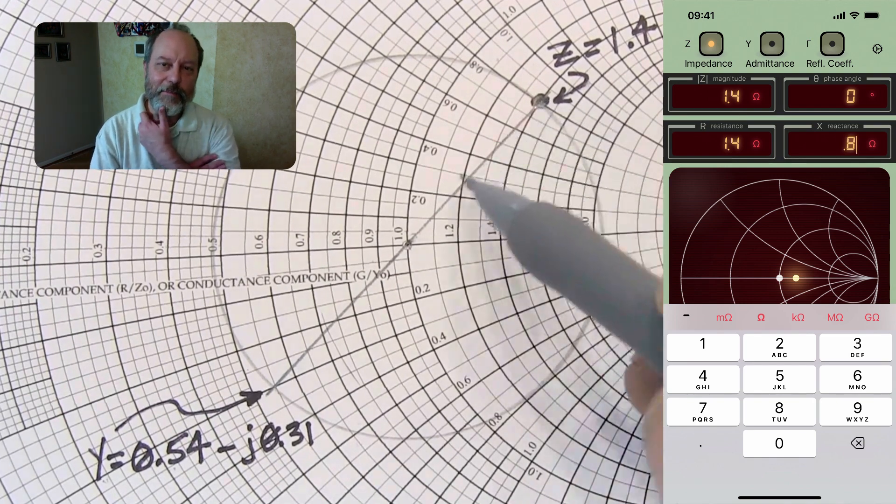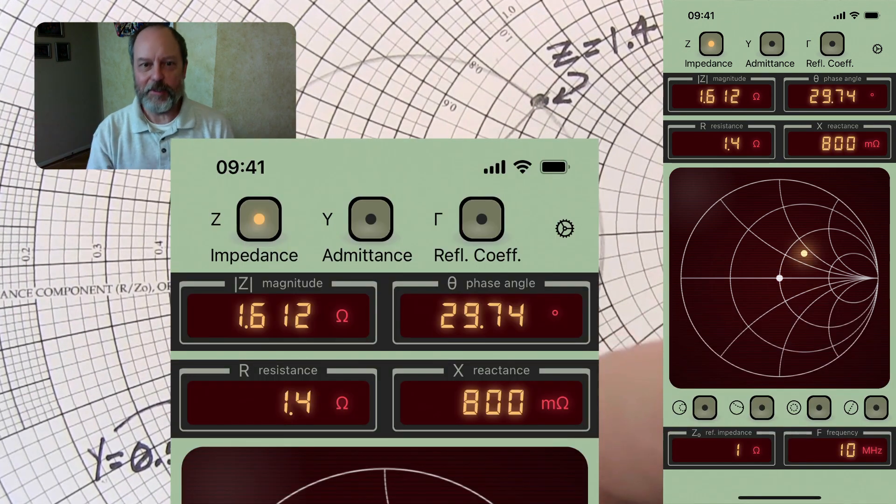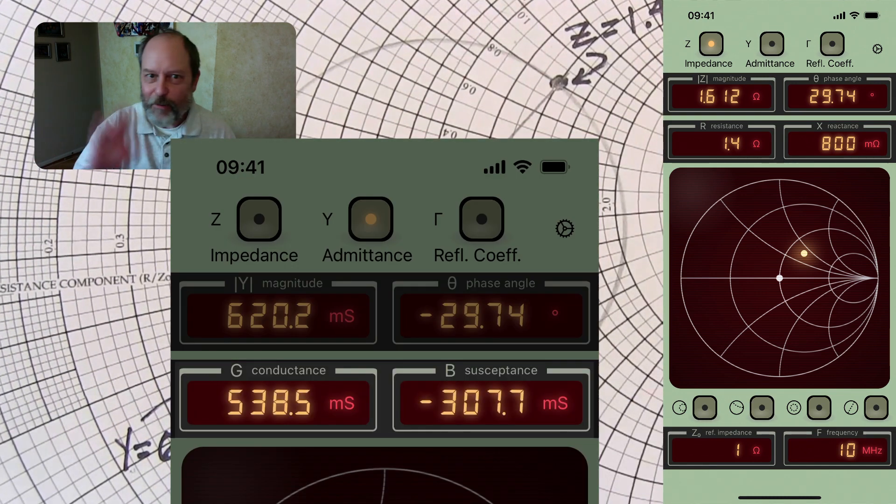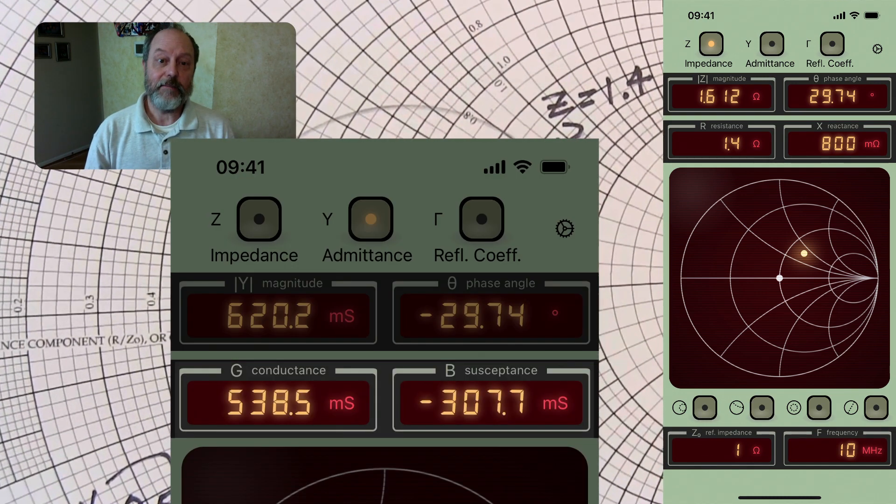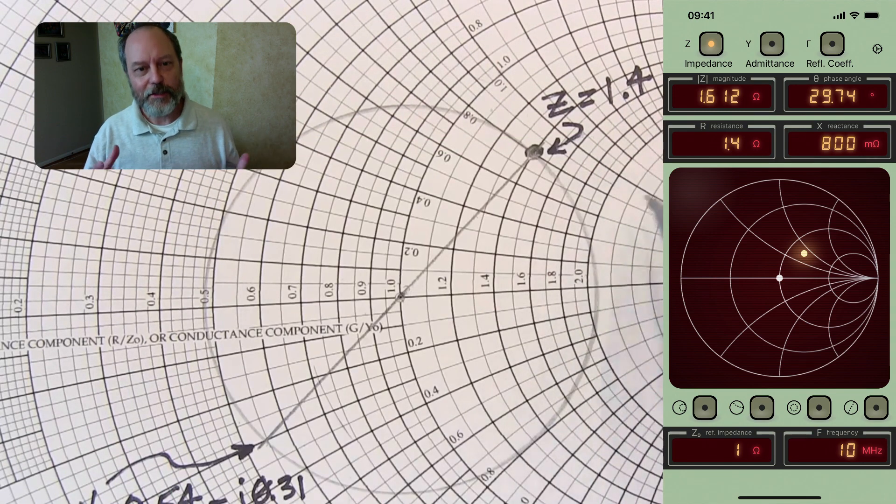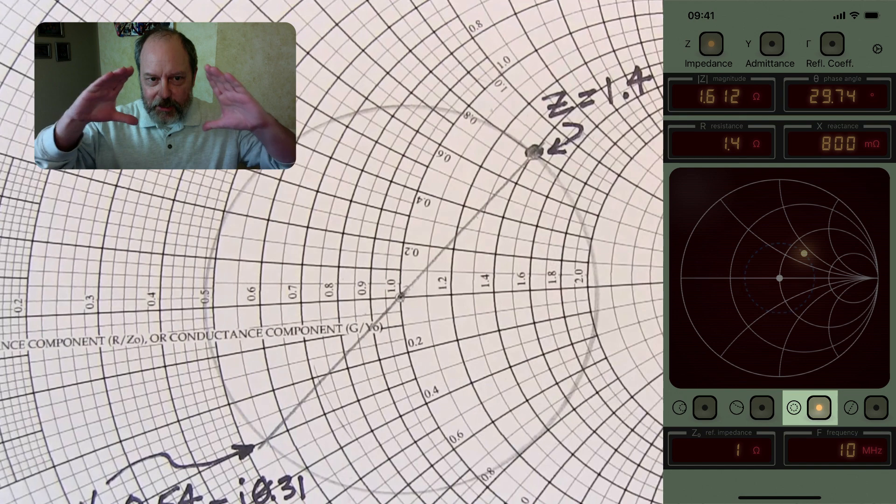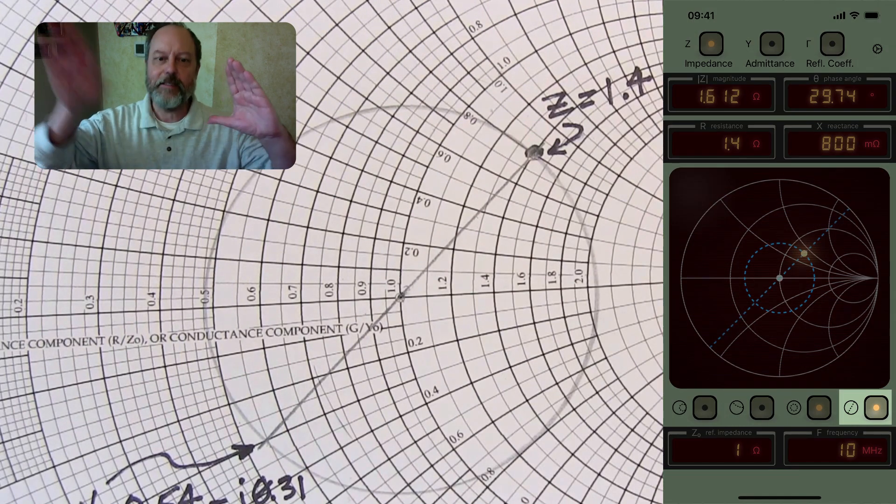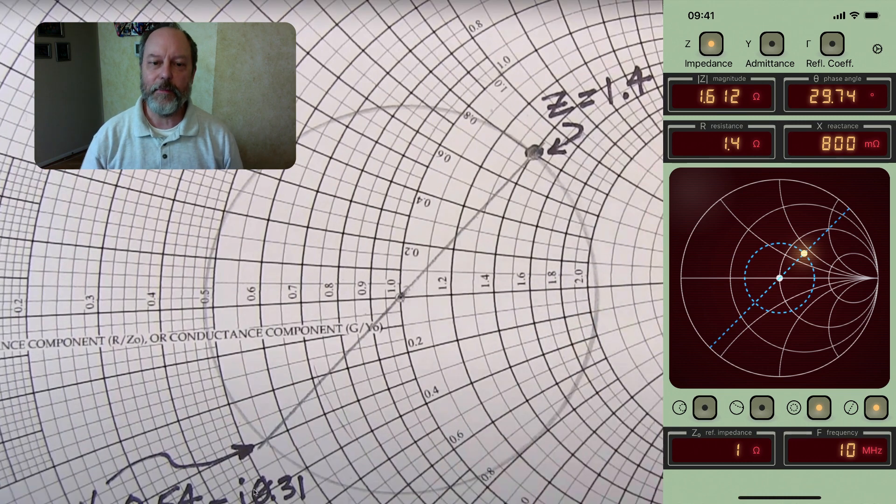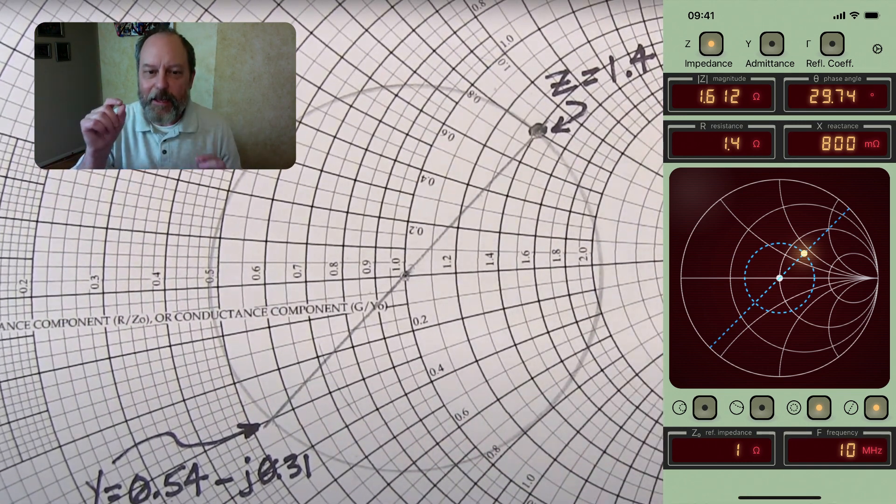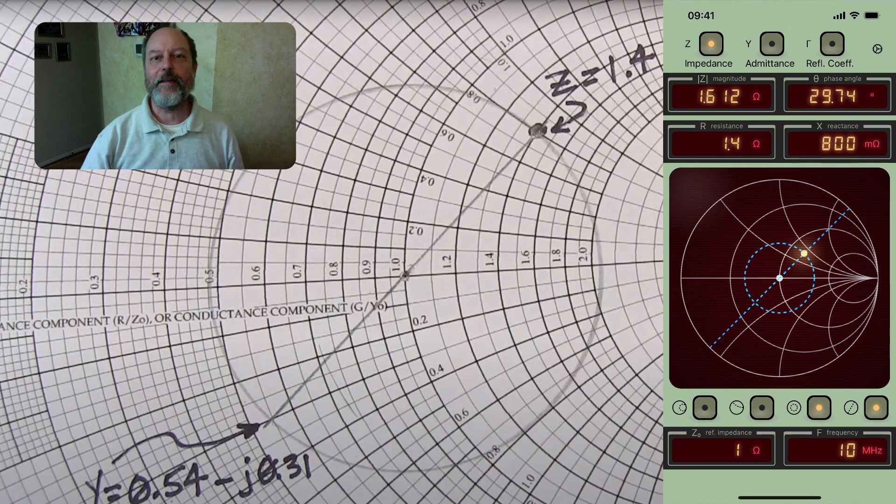Now at this point, if you wanted to know the admittance in the app, you could just simply switch the admittance view and you would see that it's 538.5 millisiemens minus 307.7 millisiemens. But as Alan shows, you can draw a circle around the origin. Here we are going to enable a circle cursor. And then you bisect that with a radial line cursor. And then as Alan shows, the admittance is just on the other side of that circle.